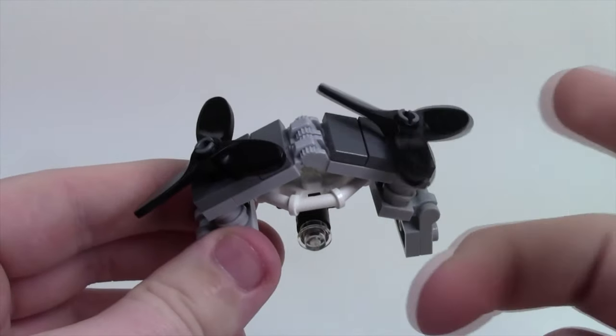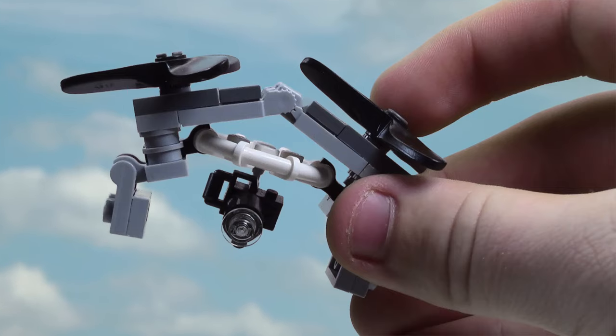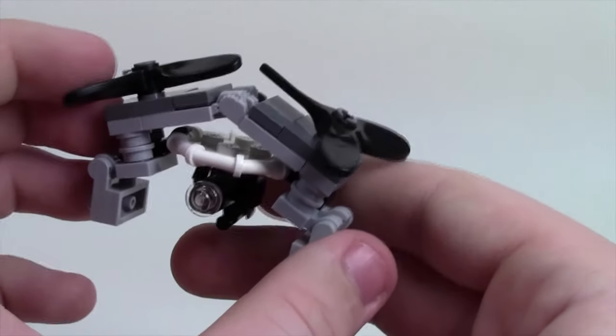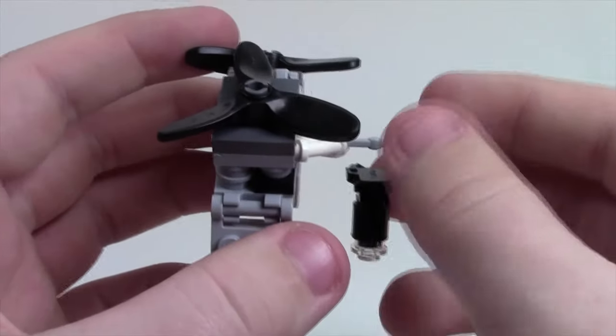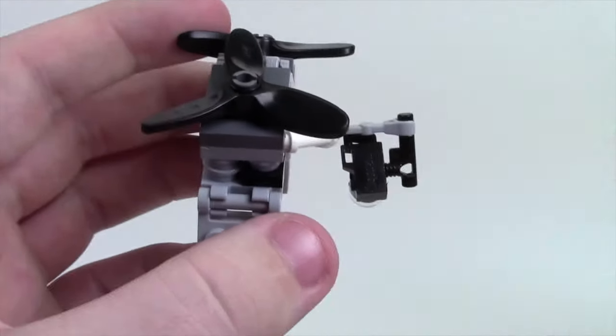A neat feature about this drone is the propellers do indeed spin both of them and the camera does move in a variety of angles from the front on view to the looking down view to the side to side view.